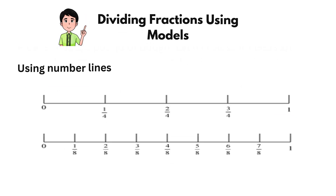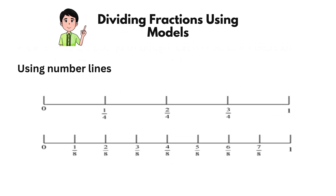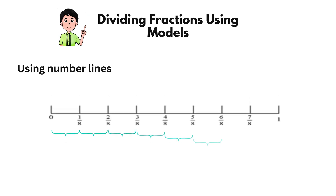Using number lines, the illustration below shows three-quarters and eighths on a number line. There are eight equal jumps of eighths on a number line, so there are six equal jumps of eighths in three-quarters. Therefore, the baker can make six croissants.